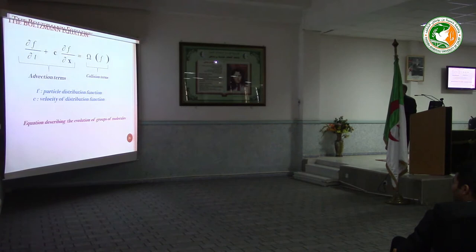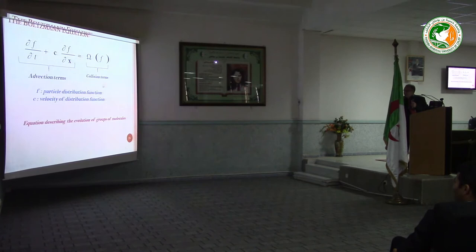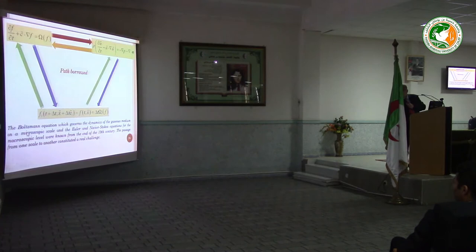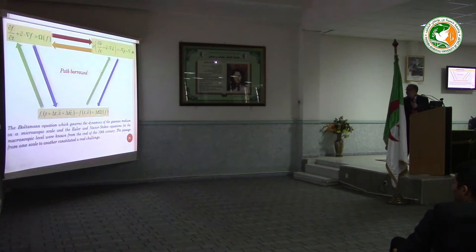This is the lattice Boltzmann equation. You see, f is the distribution function. This is the advection term, and this is the collision term. This equation describes the dynamics of a group of molecules. From this equation we can derive the Navier-Stokes equation. And this is the discrete lattice form of these equations.